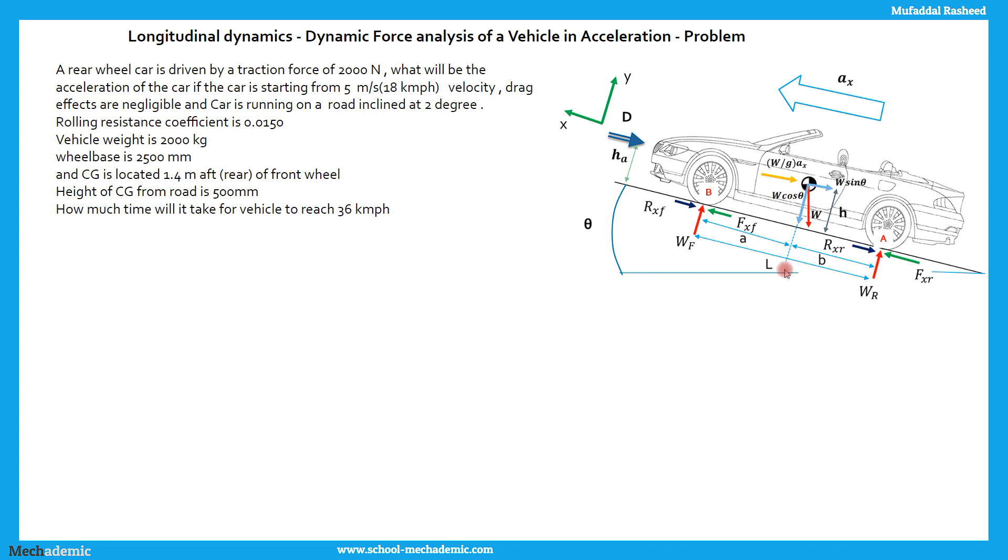Wheel base, A plus B or L, is 2500 millimeters. CG is located 1.4 meters aft of the front wheel, towards the rear of the front wheel. The value of A is 1.4 meters and value of B is L minus A, 2.5 minus 1.4 is 1.1. The height of the CG or the center of gravity from the ground is 500 mm. This height h over here is 500 mm or 0.5 meters.